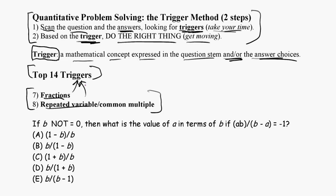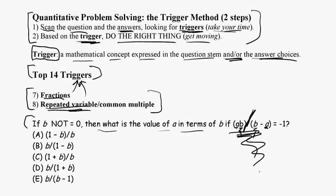As soon as you see a fraction, that is a trigger for you to do something specific. As soon as you see a repeated variable, that is a trigger for you to do something. For example, in this question — if b is not equal to zero, then what is the value of a in terms of b — notice there is a fraction trigger, and repeated variables: a appears twice and b appears twice. Those are triggers for me to do something.